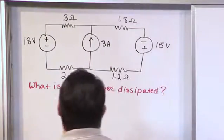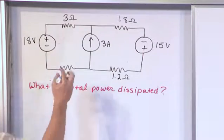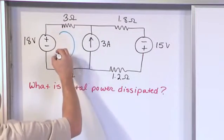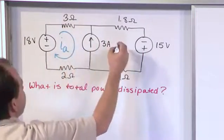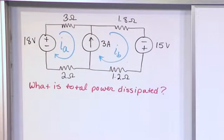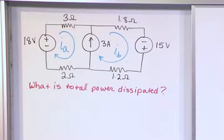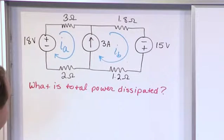So the first thing you do is you look at this thing and you see two meshes. We're going to label them right now. So we'll call this guy mesh a, i sub a, we'll call this guy mesh i sub b. And we notice by the way that we see this current source. We've cautioned you to be careful when you see current sources in a mesh current problem, we'll just get to it when we get to it.